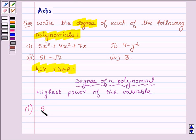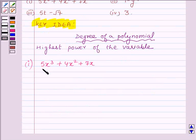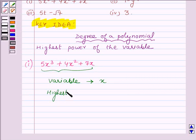First is 5x³ + 4x² + 7x. Here on observing this algebraic expression, we find that the variable in this polynomial is x and exponents are 1, 2, and 3, and the highest exponent is 3. Therefore, the degree of this polynomial is equal to 3.